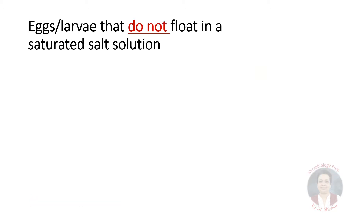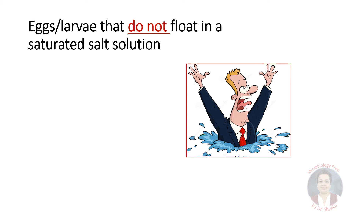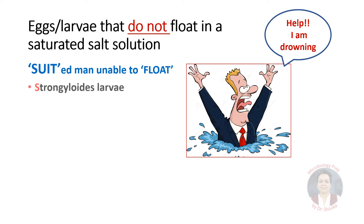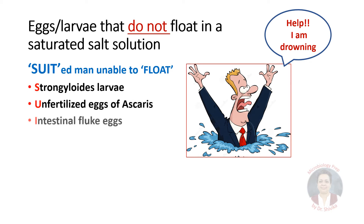Our second mnemonic is for eggs or larvae that do not float in a saturated salt solution. Keep this pic in your mind — we see a suited man calling for help because he is drowning. So 'suit' is our mnemonic. Strongyloides larvae, unfertilized eggs of Ascaris, intestinal fluke eggs, and Taenia eggs. So fertilized eggs of Ascaris float whereas unfertilized eggs of Ascaris do not float.